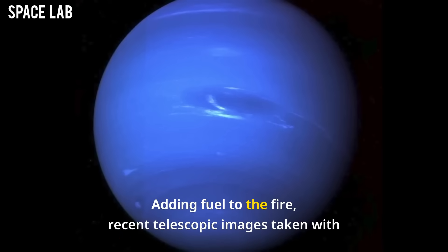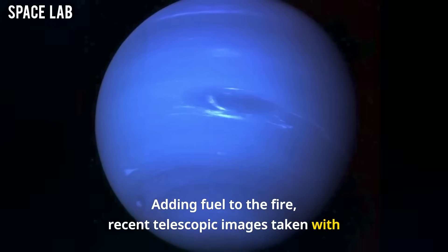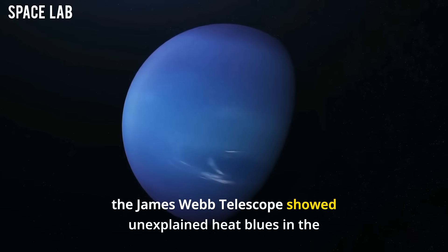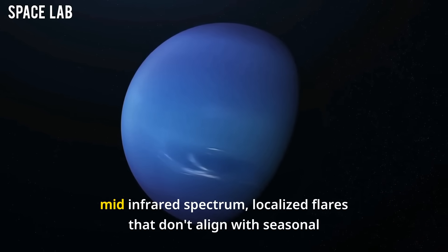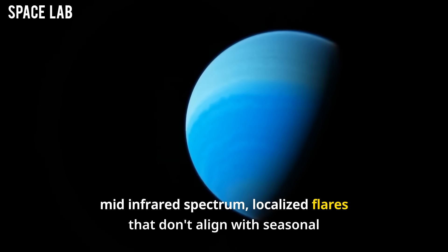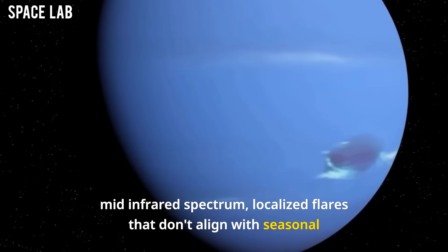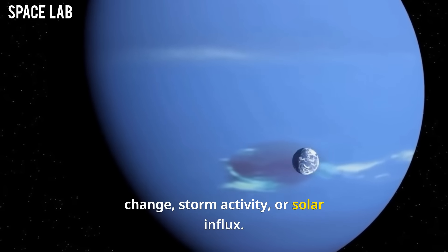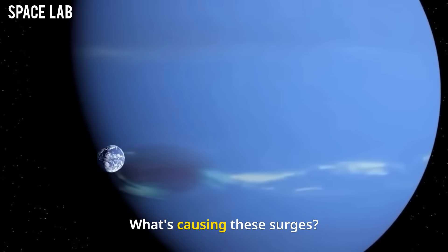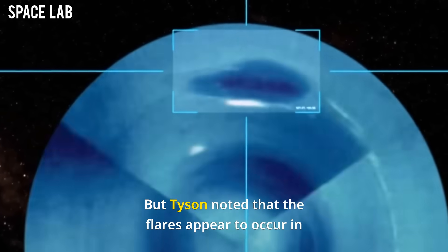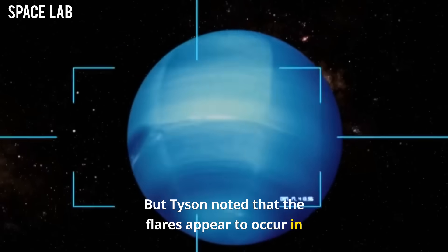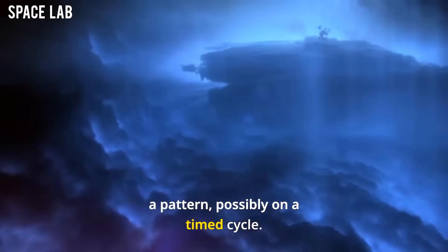Adding fuel to the fire, recent telescopic images taken with the James Webb telescope showed unexplained heat blues in the mid-infrared spectrum, localized flares that don't align with seasonal change, storm activity, or solar influx. What's causing these surges? No one knows. But Tyson noted that the flares appear to occur in a pattern, possibly on a timed cycle.